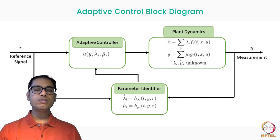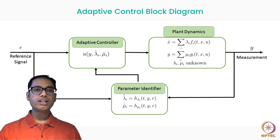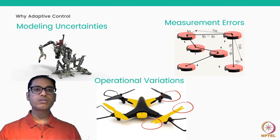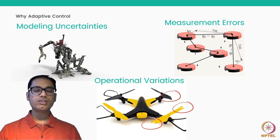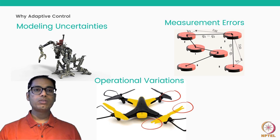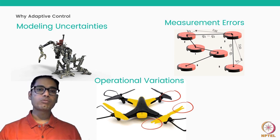Why do we have such uncertainties? One of the first reasons is because of modeling issues. Typically you have rather complex real-world systems, but we simplify the model to make the control and design problem tractable. These approximations lead to uncertainties and unknowns in the system in the form of parameters.